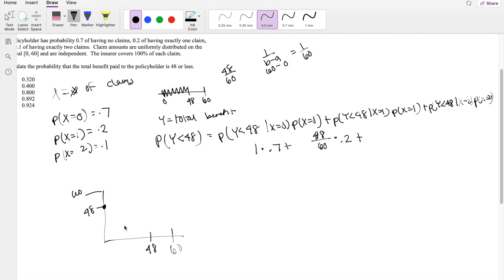So it will be here. And likewise, if let's say the first claim has 1, then the second claim has to be 47, in order to be less than 48. And likewise, you can see, if there's two claims, this has to be 46, in order for it to be less.